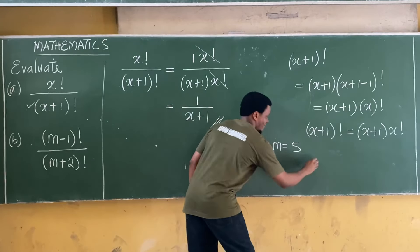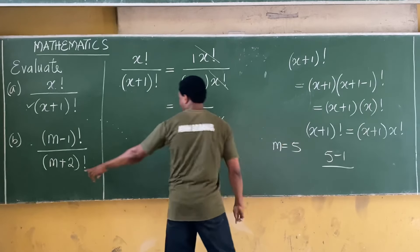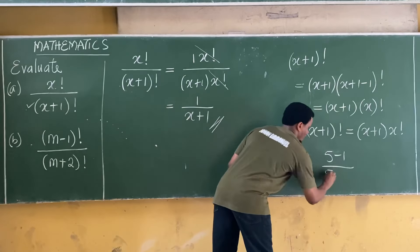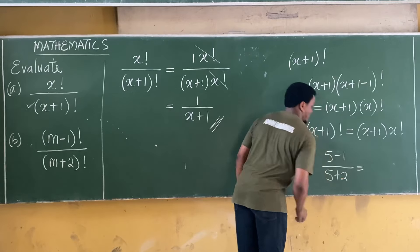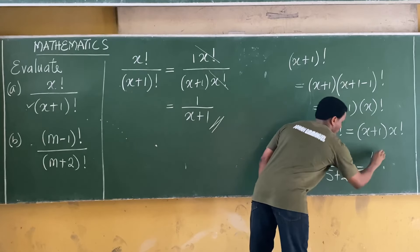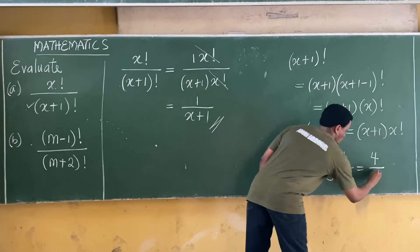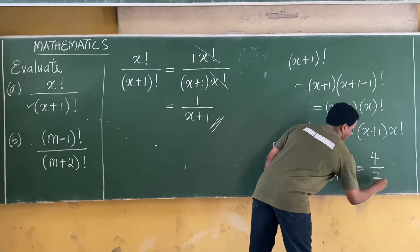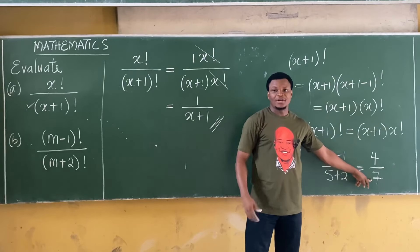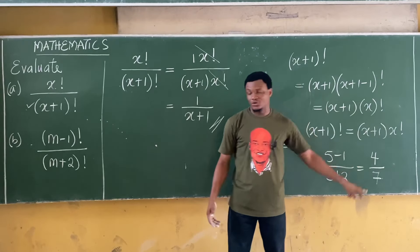If m = 5, then (m−1) = 5−1 = 4 and (m+2) = 5+2 = 7. So we have 4! over 7!, and it's clear that the denominator (m+2)! is greater than the numerator (m−1)!.